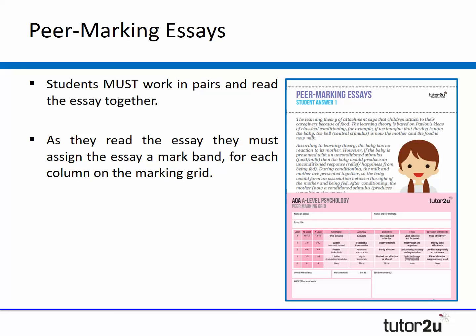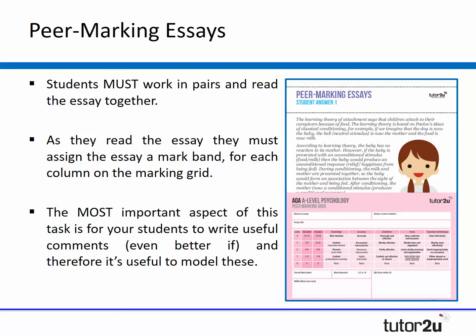A few tips for peer marking: always make your students work in pairs and read the essays together. Don't let them mark alone because you want them to have the discussion and dialogue around each of the different marking criteria — that will improve the accuracy of their marking. When they read the essay, they then assign a mark band for each of the different columns, highlighting their way across it exactly as we've done. And then the most important aspect is to train your students to write good 'even better if' comments — you don't want them writing things like 'more evaluation'; you want them to really expand on that and possibly model some expectations of what you expect in that box to begin with.